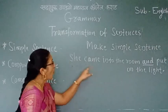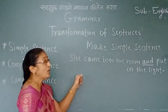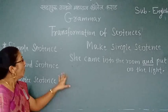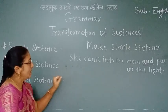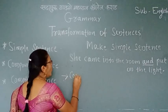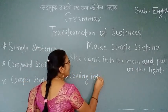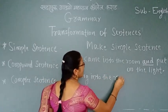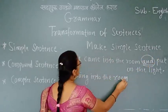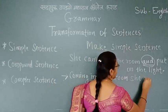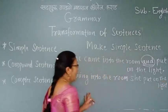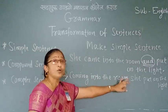With the help of a coordinate conjunction, we join the two clauses here. Now we want to make it simple. We make this sentence by using a participle — verb plus -ing. The answer is: 'Coming into the room, she put on the light.' By using the present participle, we make a simple sentence.